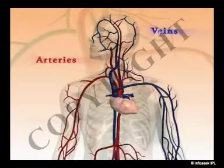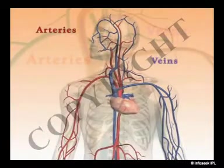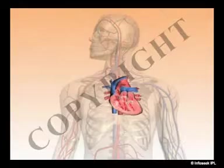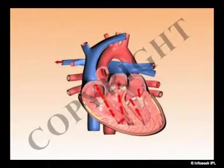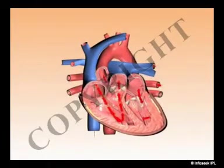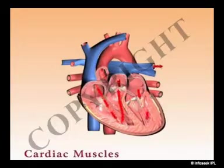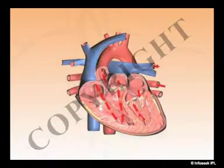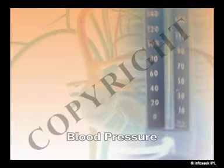Both arteries and veins play an important role in the flow of blood. The pumping action of the heart creates a definite pressure on the cardiac muscles forming the heart wall, which causes the blood to flow through the arteries. This is called blood pressure, popularly known as BP.